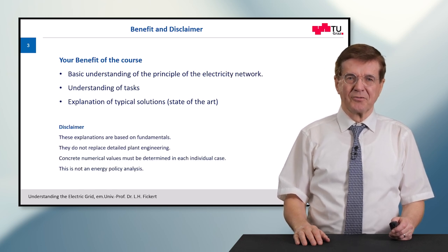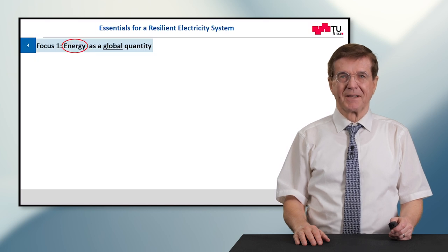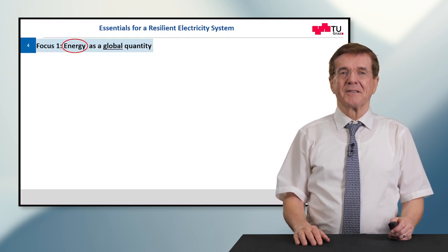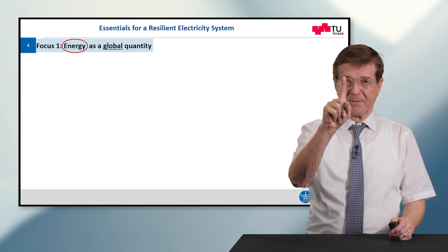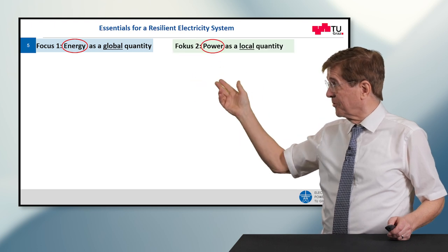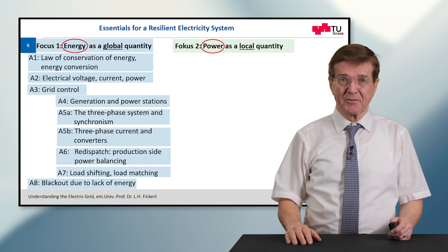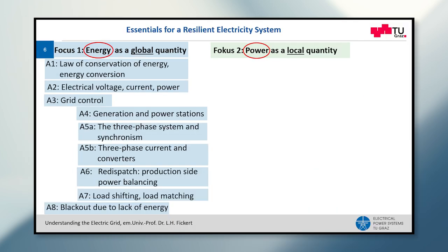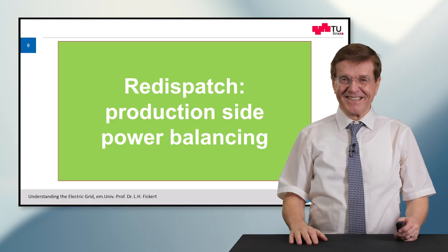In this course I do not cover detailed plant engineering, for example. A resilient electrical system relies on two aspects: aspect number one is energy as a global quantity, and the second one is power as a global quantity. Today we concentrate on redispatch — this is production-side power balancing. Now let's get started.